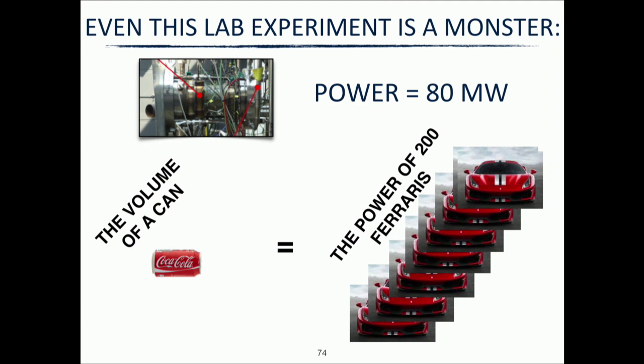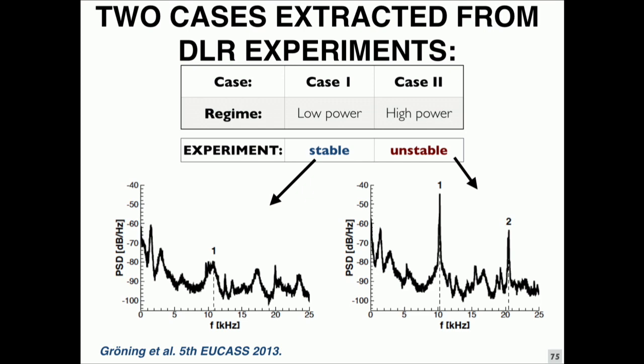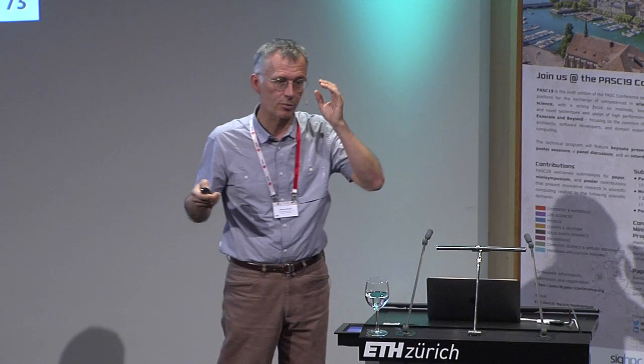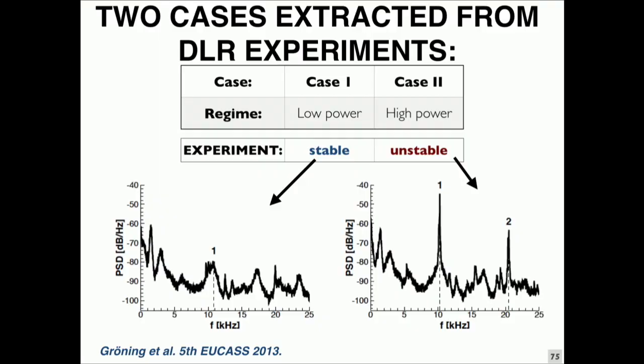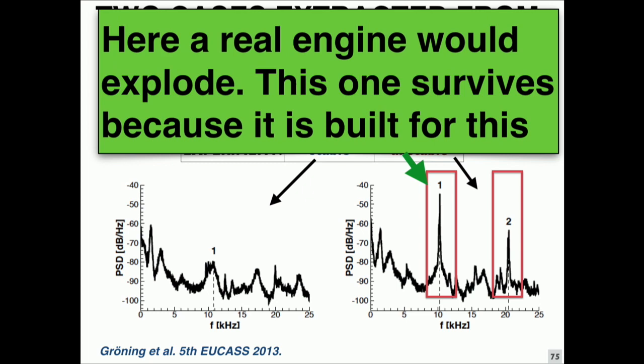Interestingly, this engine becomes unstable. This is a Fourier transform of the noise for one stable case and another case here which is unstable, where you just increase the power by maybe 10% and suddenly the engine gets crazy. It has these two big peaks which are significant of a very strong instability occurring inside the engine. The question was: can you mimic that with the simulation? If these things happen in the real engine, the real engine would explode right away.